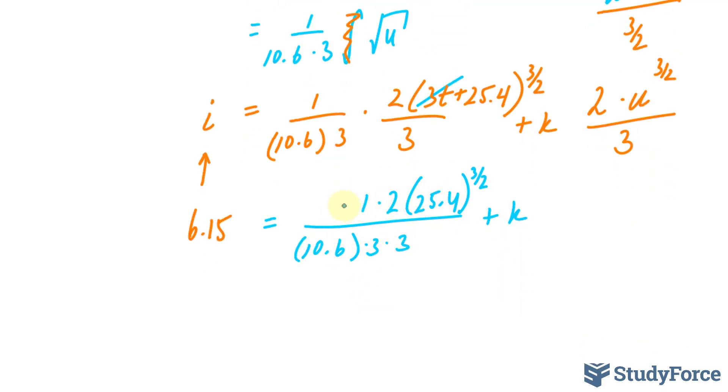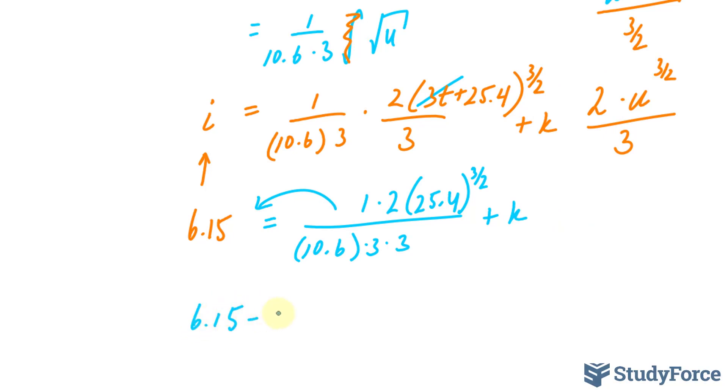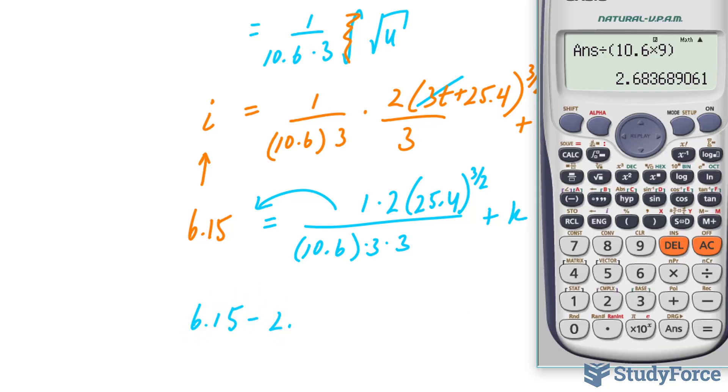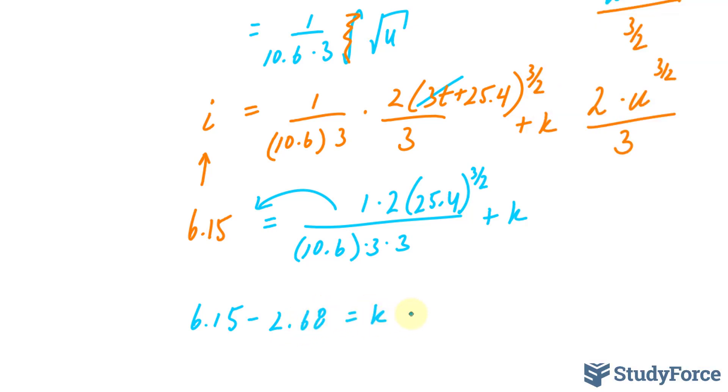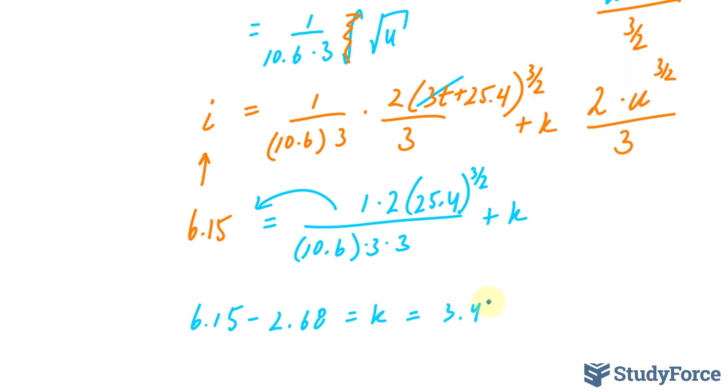So I'll find out what this is and then move it over to this side to solve for k. Here's how. We'll do the top part first: 2 times 25.4 to the power of 1.5, that's 3 over 2, divided by 10.6 times 3 times 3 is 9. And we end up with 2.68. We'll bring this part over now, giving us 6.15 minus 2.68 is equal to k. Using our calculator, 6.15 minus that number, we get 3.46 as our k value, and that's in amperes.